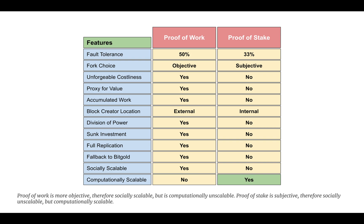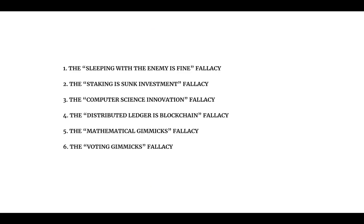The six proof of stake fallacies. Given the above comparisons but the public narratives that proof of stake proponents have made popular, there are six proof of stake fallacies that need to be clarified and debunked. Fallacy one — the sleeping with the enemy is fine fallacy: mining and proof of work is external, but stakers in proof of stake are inside the ledger. Full nodes cannot get rid of stakers in proof of stake systems, even if they split. This means proof of stake is not censorship resistant and censors cannot be evicted. Sleeping with the enemy is not fine.